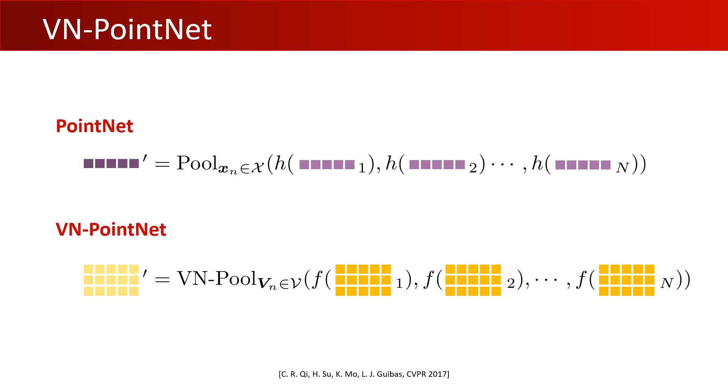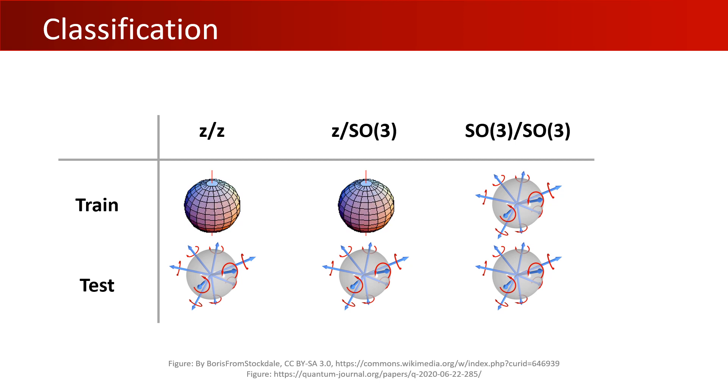We now show our experimental results on three core tasks in point cloud processing: classification, segmentation, and neural implicit reconstruction. Classification and segmentation are rotation invariant tasks, while reconstruction is rotation equivariant. In classification and segmentation, we adopt three train and test settings: z/z, z/SO3, and SO3/SO3, where z stands for data augmentation with rotations only around the z axis, and SO3 for arbitrary rotations.